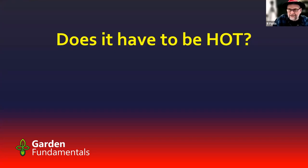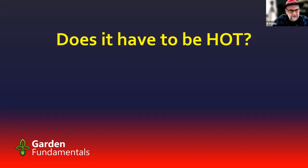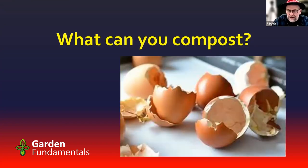C:N ratio is important if you want fast compost; it's not so important if you want slow compost. Does it have to be hot? The answer is no. You can take any kind of organic matter, drop it on the ground, and it will compost. So the question is: what can you compost? The answer is that you can compost everything — but there are some things you may not want to for various reasons.